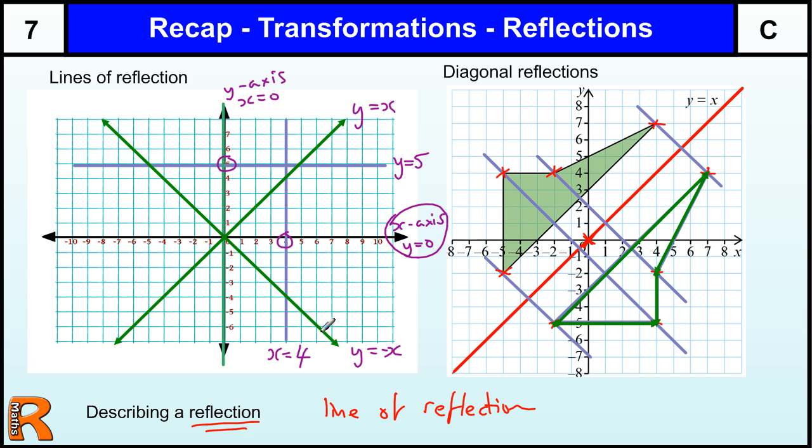So the equation of the line. One of these equations will describe the line of reflection. Quite often, you can get away with putting the y-axis or the x-axis, if that's what it is. But for the ones that aren't, you'll have to use the proper equations, y equals, x equals, and maybe one of the diagonal lines. So that's reflections recap for transformations.